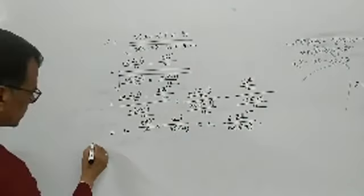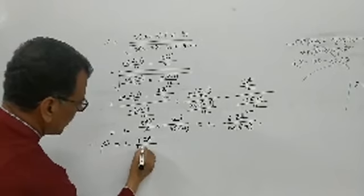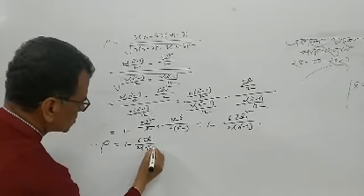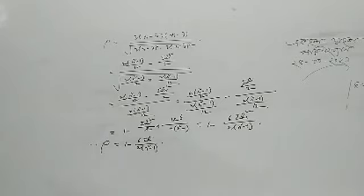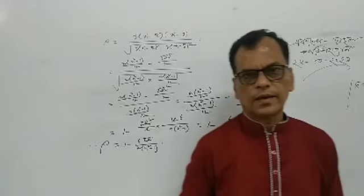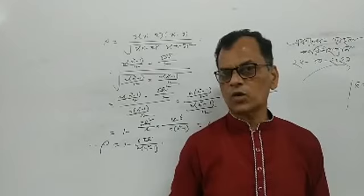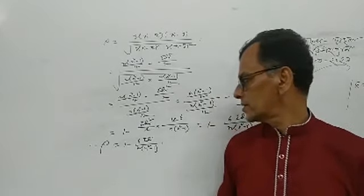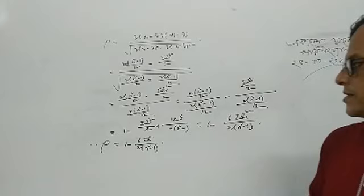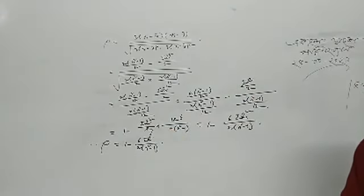Therefore the Spearman rank correlation coefficient (kromosome sphashanku) rho is equal to 1 minus 6 summation di squared divided by n(n squared minus 1). And for x and y, the Spearman rank correlation is: rho equals 1 minus 6 summation di squared divided by n(n squared minus 1).